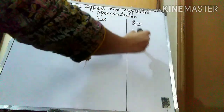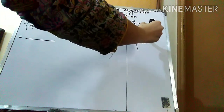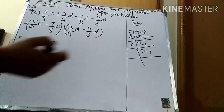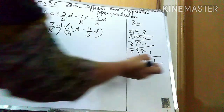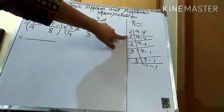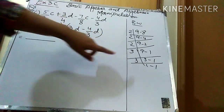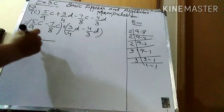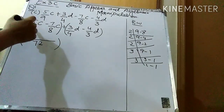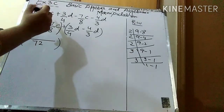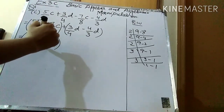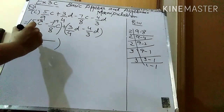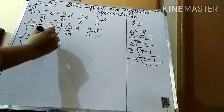I have to take the LCM of the denominators 9 and 8. LCM of 9 and 8 is 72. Which times 9 is 72? It's 8 times — multiply numerator with 8. Which times 8 is 72? It's 9 times — multiply numerator with 9. So: 5×8 = 40c minus 7×9 = 63c.